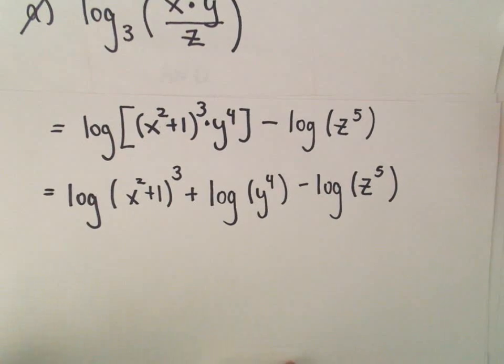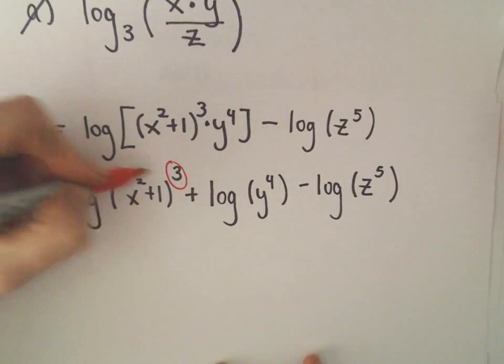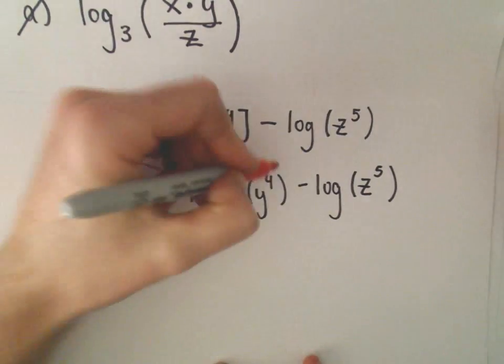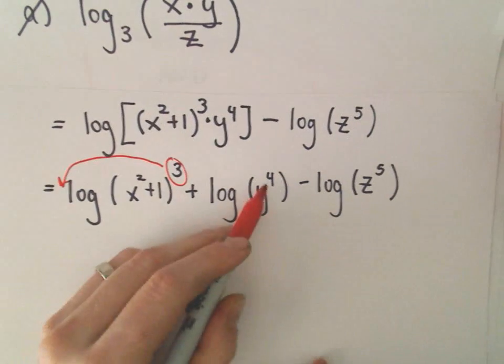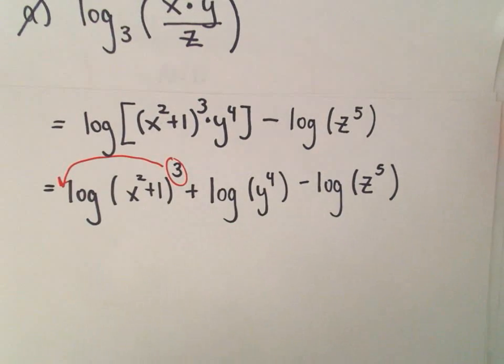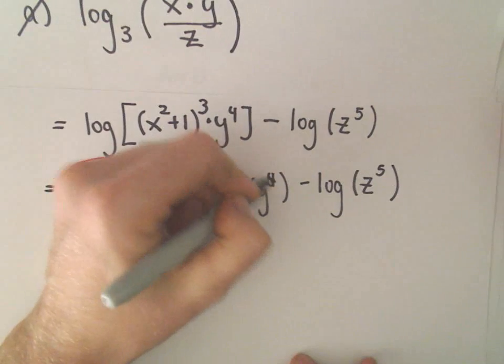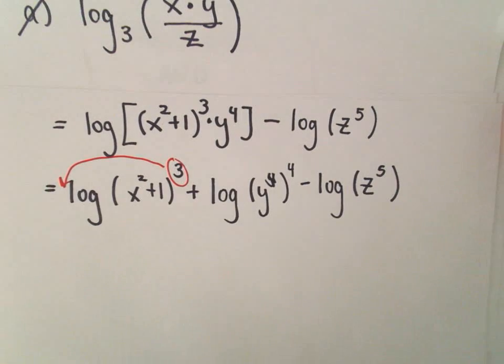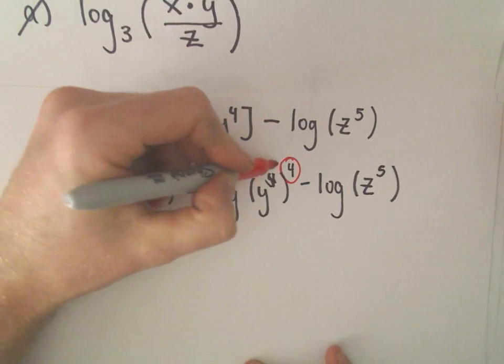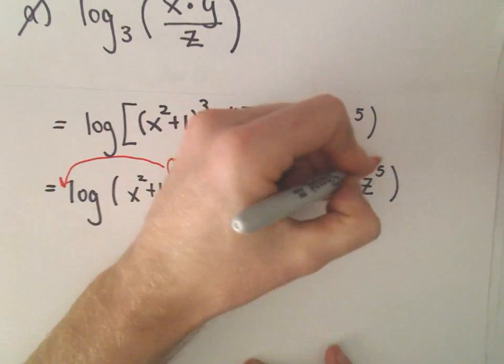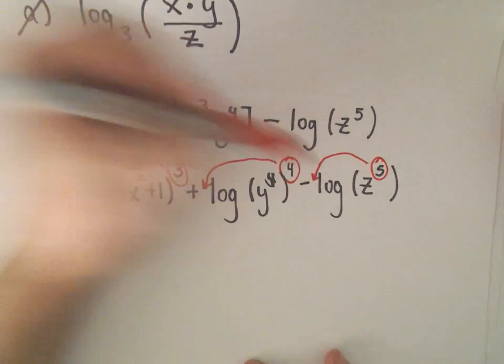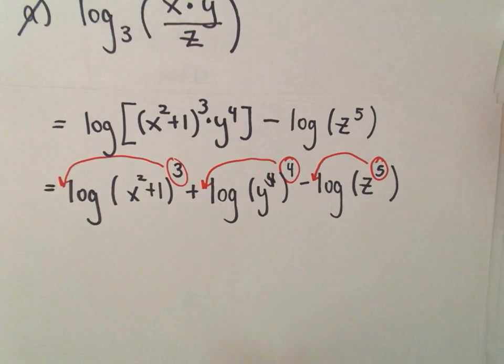And now the last thing I'll do is I'm just going to use this property that says we can pull our exponents out front. And y to the fourth, we could have certainly had the exponent of the four on the outside if we wanted to. Says the exact same thing. So we still have this exponent. We can pull it out front. The same thing with the exponent of five. We can pull it out front. And that'll be our last step.